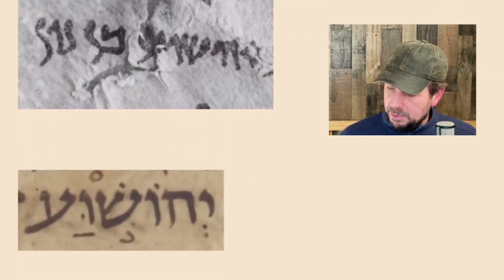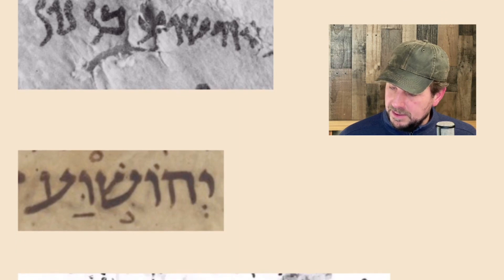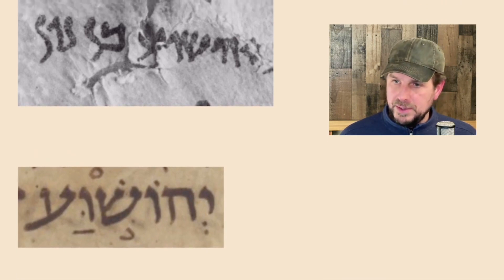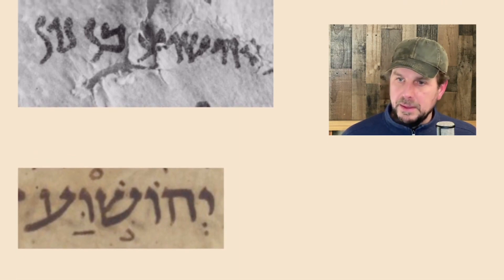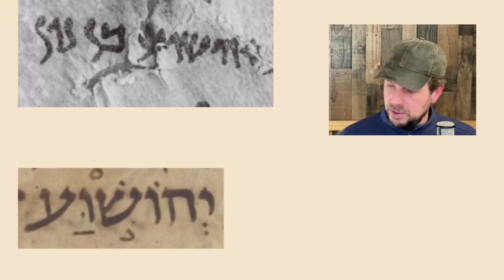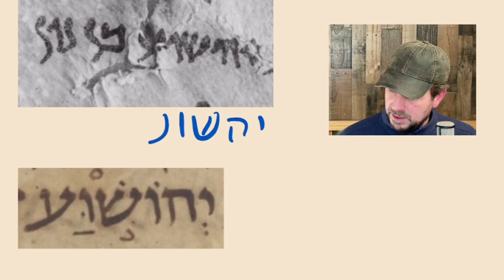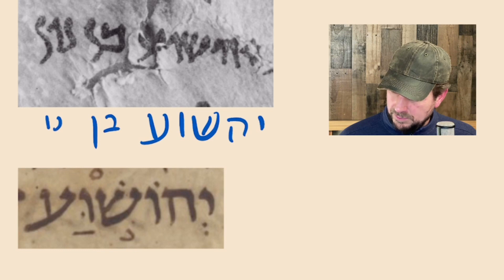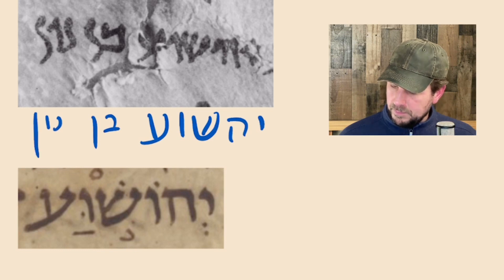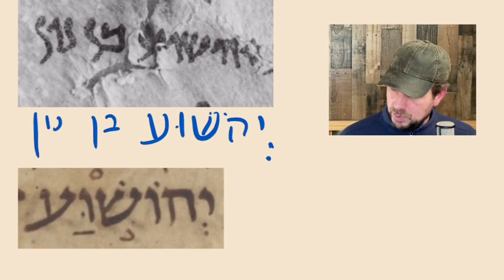Here's another example — also from Qumran. This says Yehoshua ben Nun, Joshua ben Nun. It's Yod, He, Shin, Vav, Ayin, and then of course Ben Nun — Bet Nun, and then Nun, Vav, Nun. The vocalization would be Yehoshua.